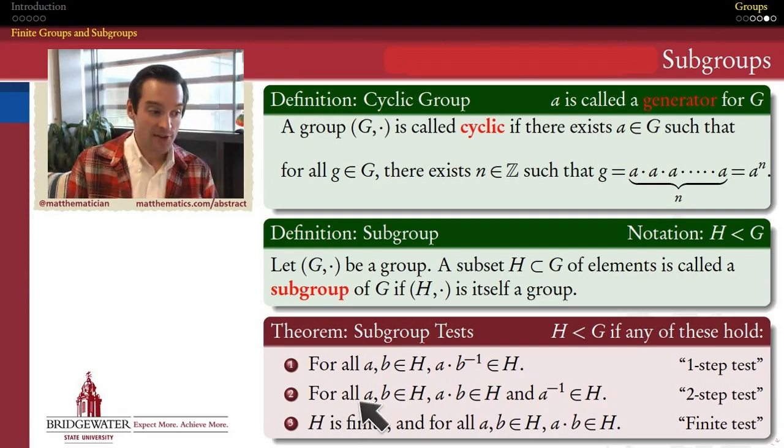The two-step test uses the original operation instead of the inverse operation. So this says that if in my subset for all a and b, the result of combining a and b with the operation of the group G belongs to H, so if H is closed under the group operation, and if all the inverses of the elements of H are also elements of H, that's a two-step test for that reason, because we have two things to verify. Then it will follow that H is a subgroup of G.